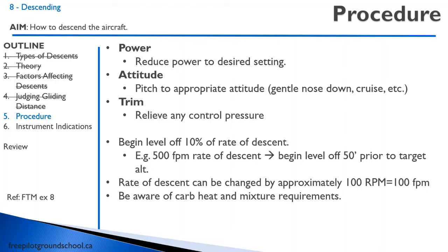There's a rough approximation for adjusting your rate of descent: 100 RPM is roughly equal to 100 feet per minute. So if you're descending at 400 feet per minute and want 500, just reduce power by about 100 RPM. Keep in mind carb heat and mixture requirements when descending.